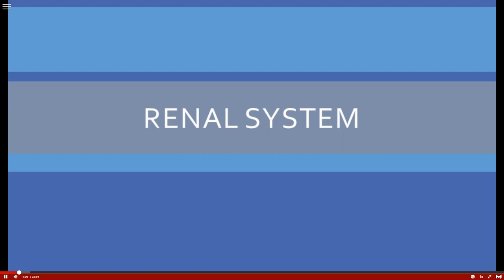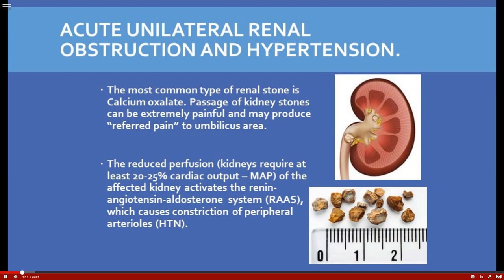First let's talk about acute unilateral renal obstruction and hypertension. One of the most common causes of obstruction is kidney stones — renal stones are extremely painful, as you can see from the jagged stones in the diagram. It's probably one of the most painful things a patient can go through.